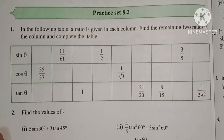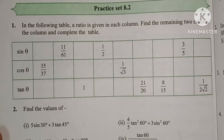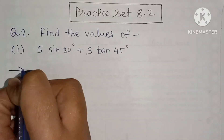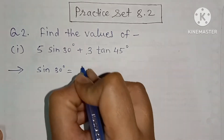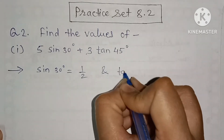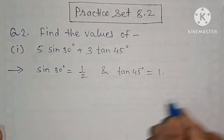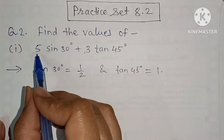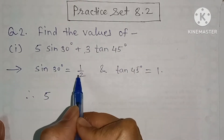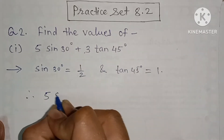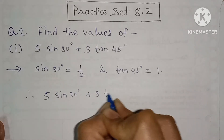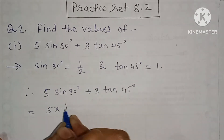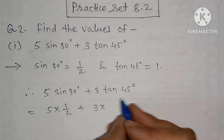Question number 2: find the value of 5 sin 30 plus 3 tan 45. First, the value of sin 30 is 1 upon 2, and the value of tan 45 is 1. Now put the values in the equation: 5 sin 30 plus 3 tan 45 becomes 5 multiplied by 1 upon 2, plus 3 into 1.